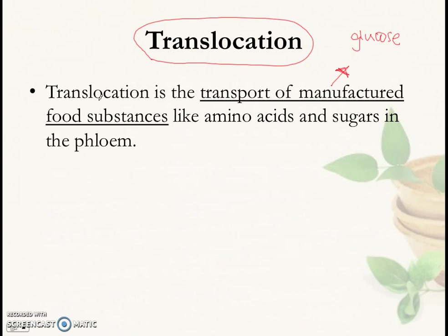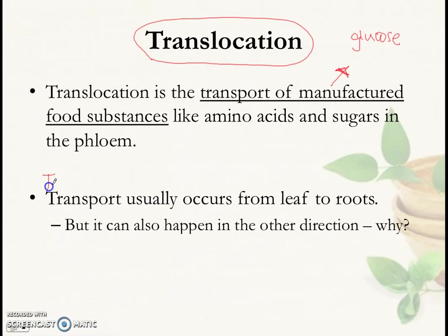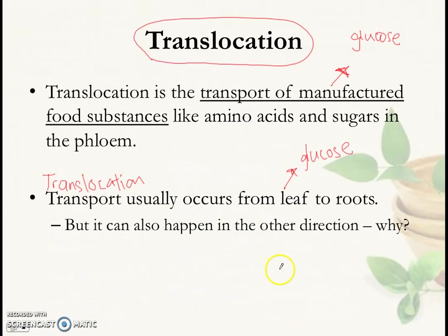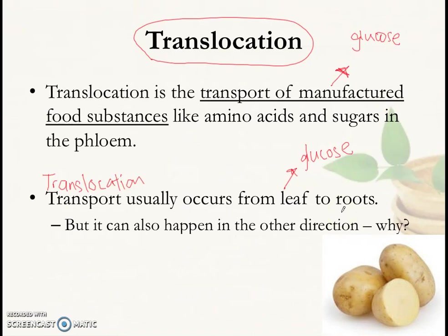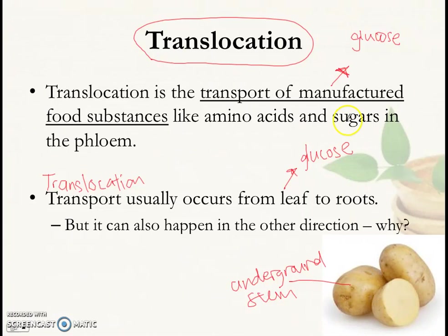Translocation usually occurs from the leaf to the roots, because leaves produce glucose, which is converted into sucrose or amino acids and transported downward. But it can also happen in the other direction — from the roots to the leaves. For example, plants like the potato store nutrients in underground stems, and in some seasons the food stored there is transported back up the plant. So translocation can happen in both directions, unlike the transport of water which only happens from roots to leaves.